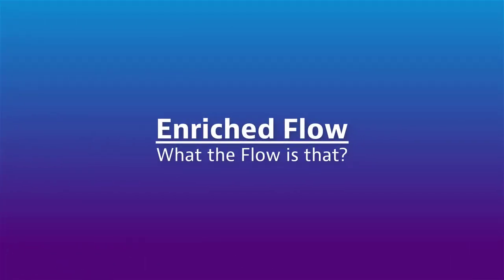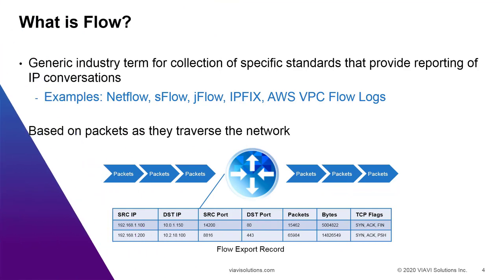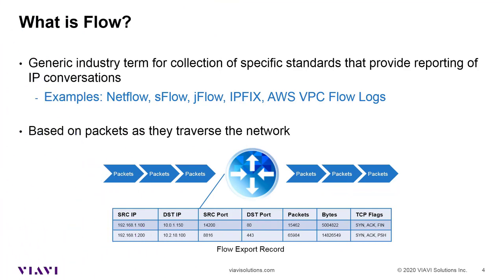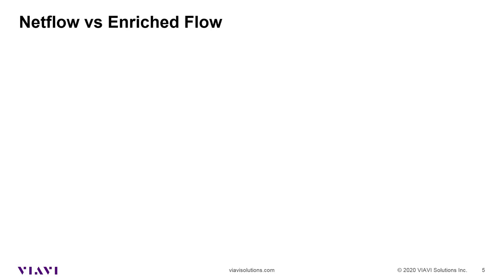Enriched flow — what the flow is that? To begin with, regular NetFlow is always going to be included. It is something that we have come to know and love over the past 25 years, giving us source and destination IP addresses, source port, destination ports, packets, bytes, flags, as well as a lot of different optional fields that have been included along the way. There are so many different flavors of this, but in general it always leads us to more questions. What else can we do with this?